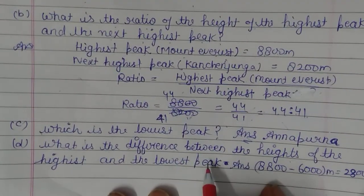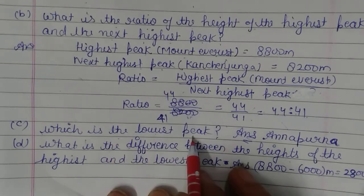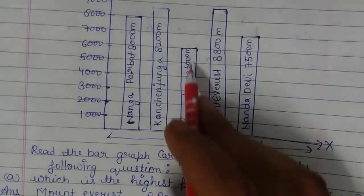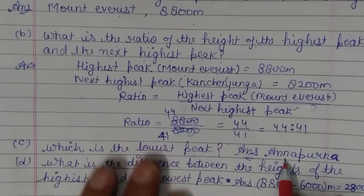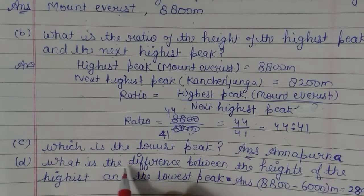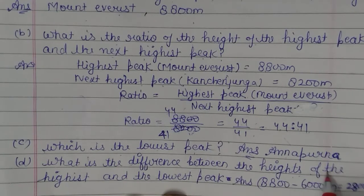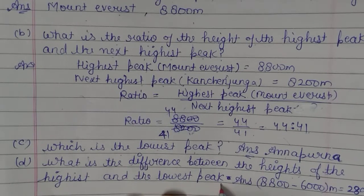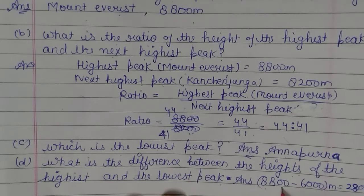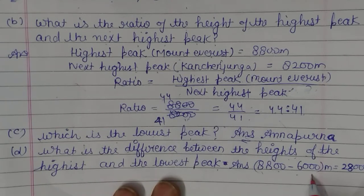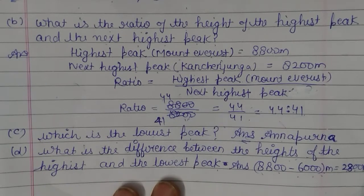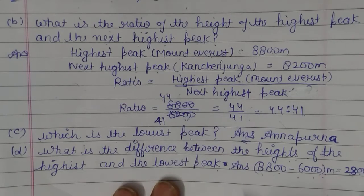C part: which is the lowest peak? The lowest peak is Annapurna. What is the difference between the heights of the highest and the lowest peak? The highest is 8,800 metres and the lowest is 6,000 metres, so the difference is 2,800 metres.